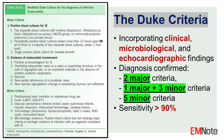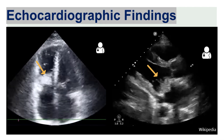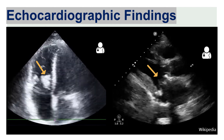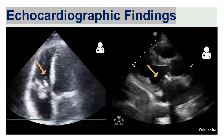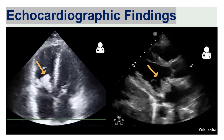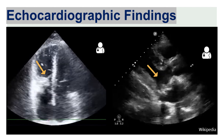The Duke Criteria incorporate clinical, microbiological, and echocardiographic findings, and demonstrate a sensitivity exceeding 90% for the diagnosis of IE. Two recorded echocardiography videos are shown here, demonstrating the presence of valvular vegetations, which is one of the major criteria of the Duke Criteria.